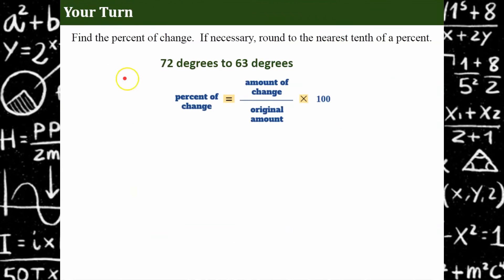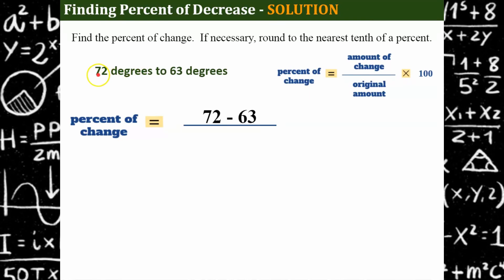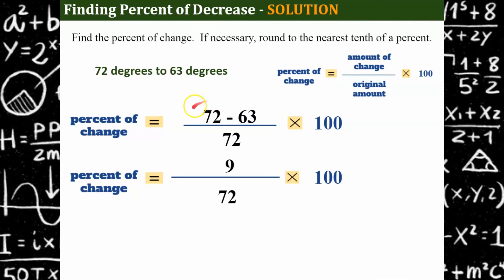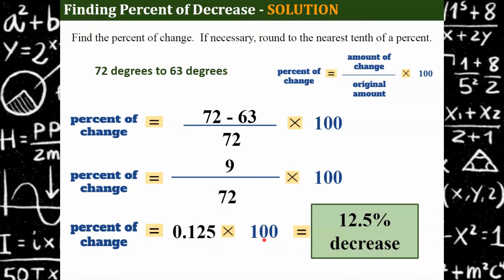Your turn — talking about temperature here. Go ahead and find the percent of change. Welcome back! The first thing we do is identify the amount of change: 72 subtract 63, all over the original amount of 72, and we want the answer as a percent. 72 subtract 63 is 9, divided by 72 is 0.125. Multiplied by 100 gives a 12.5 percent decrease. So if the temperature drops from 72 degrees to 63 degrees, that's a 12.5 percent decrease.